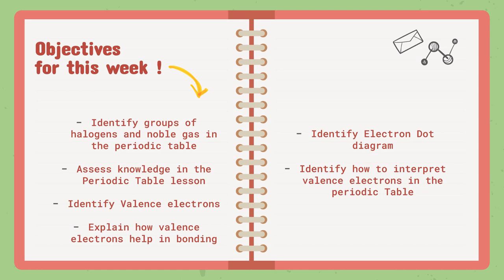And we are going to start the third lesson, which is bonding and the periodic table. We are going to start by identifying what valence electrons mean and what they are.